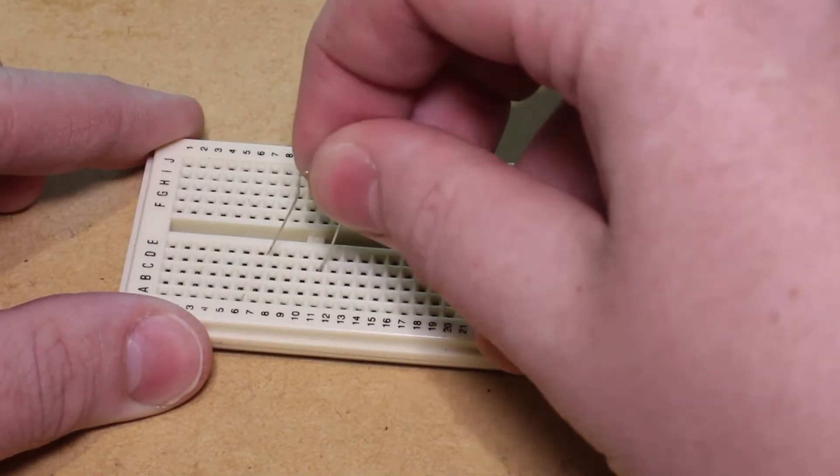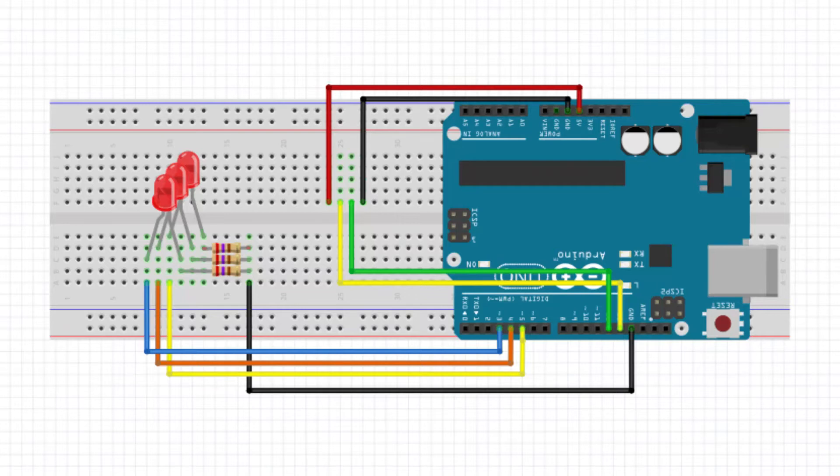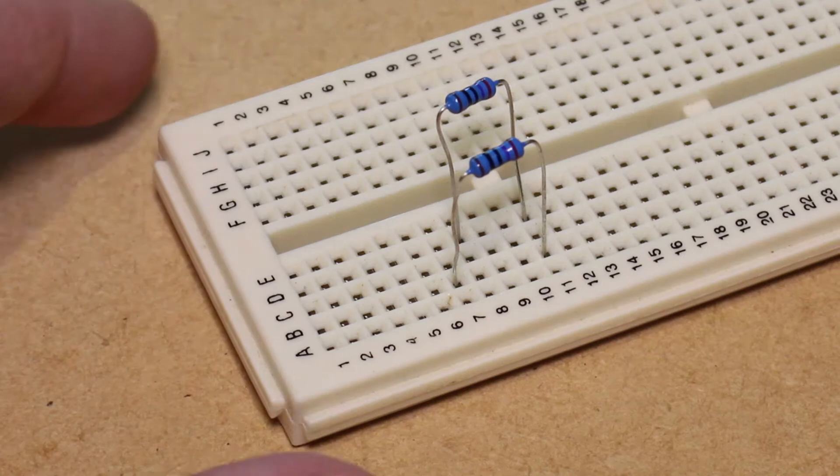I'm then going to insert the resistors and LEDs into the breadboard in the configuration shown in this diagram, connecting the resistor to the negative leg of the LED.